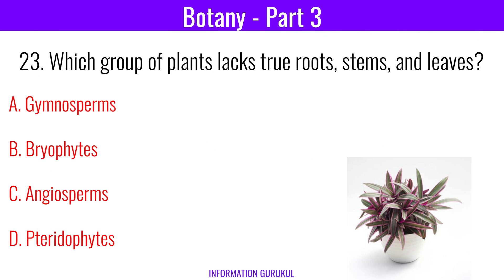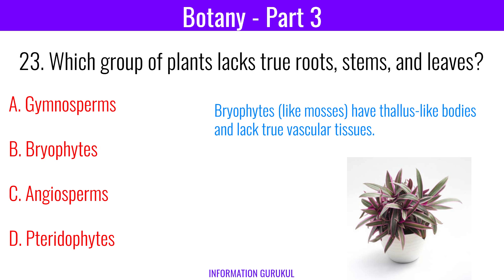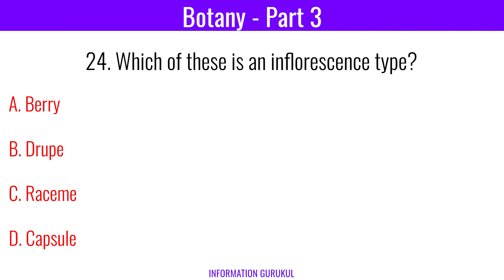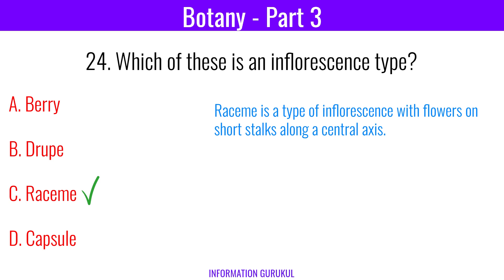Which group of plants lacks true roots, stems, and leaves? Bryophytes. Bryophytes have thallus-like bodies and lack true vascular tissues. Which of these is an inflorescence type? Raceme. Raceme is a type of inflorescence with flowers on short stalks along a central axis.